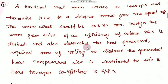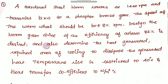Hi students. I am going to talk about worm gear design. A hardened steel worm rotates at 1440 RPM and transmits 12 kW to a phosphor bronze gear. The speed of the worm wheel should be 60 plus or minus 8% RPM. Design the worm gear drive where an efficiency of at least 82% is desired. Determine the heat generated, required area of cooling to dissipate the generated heat, and temperature rise restricted to 40 degrees Celsius.